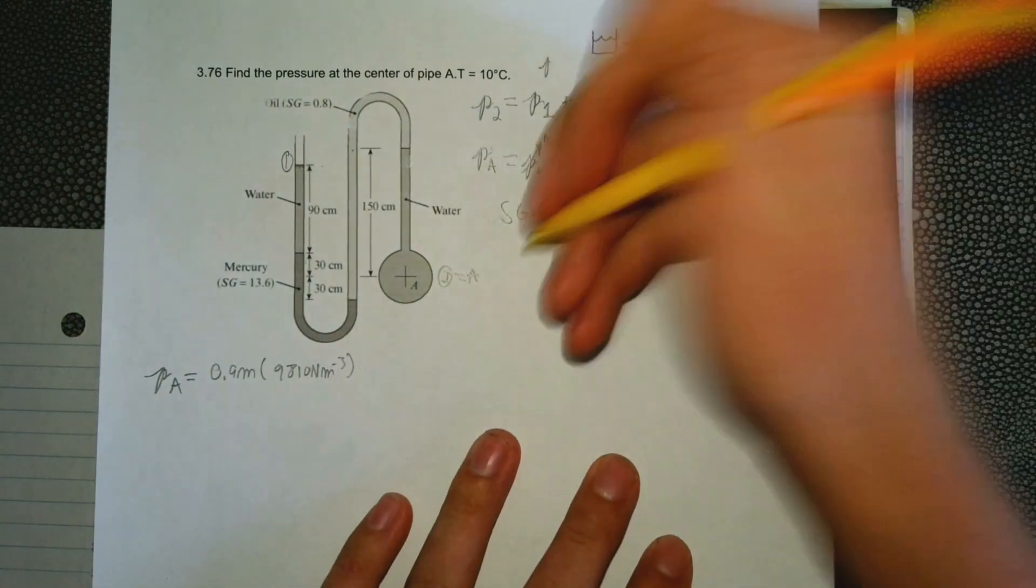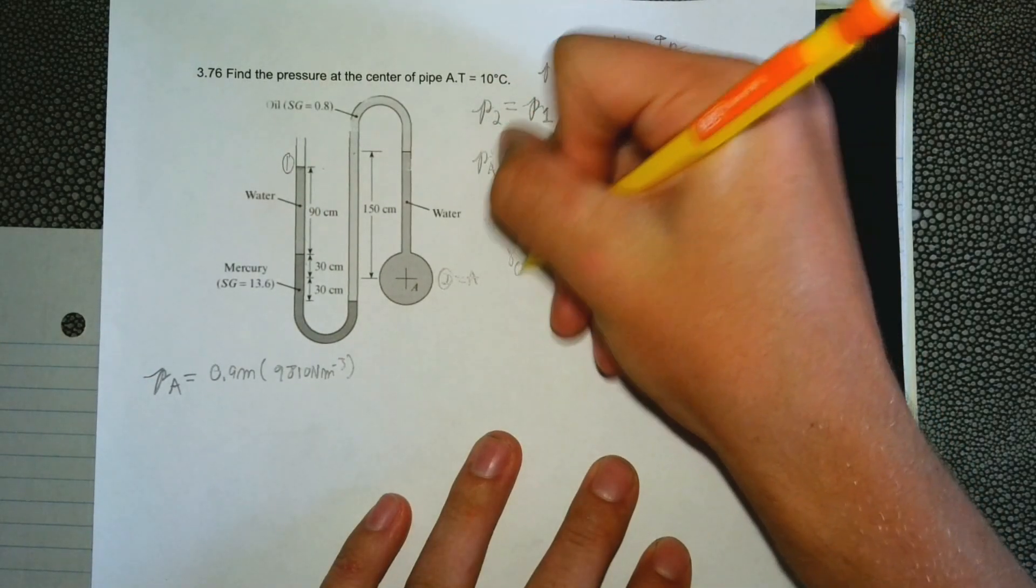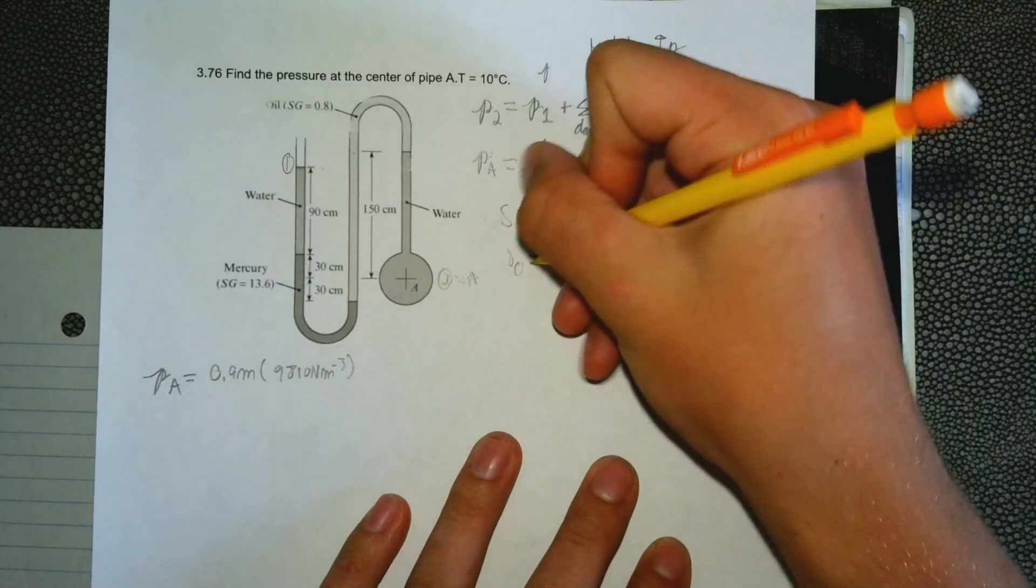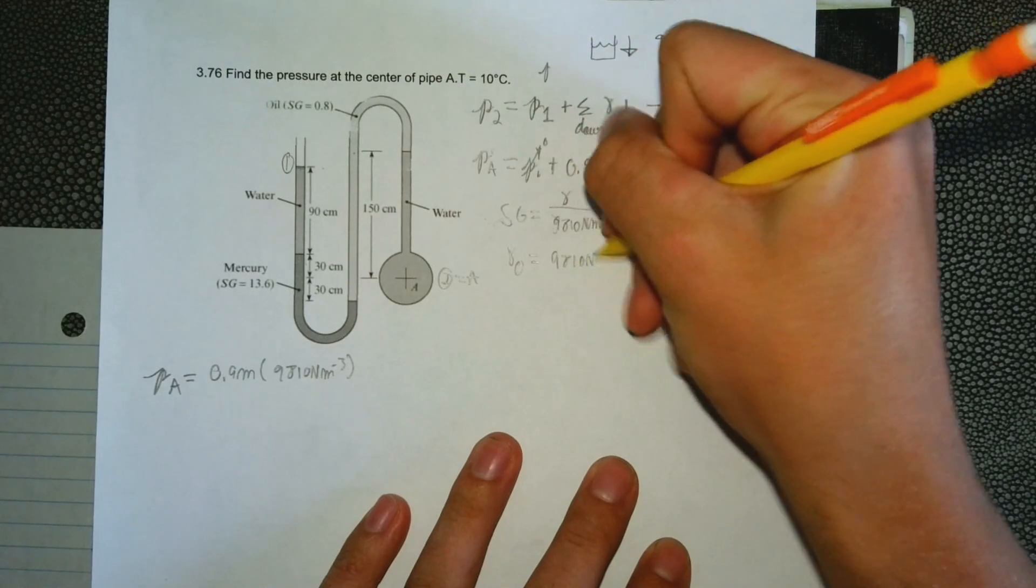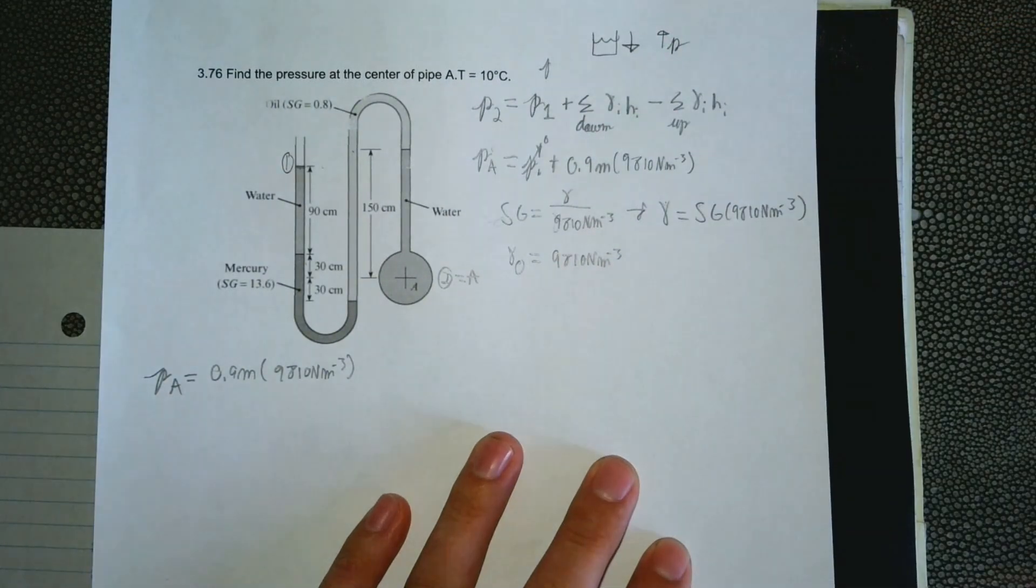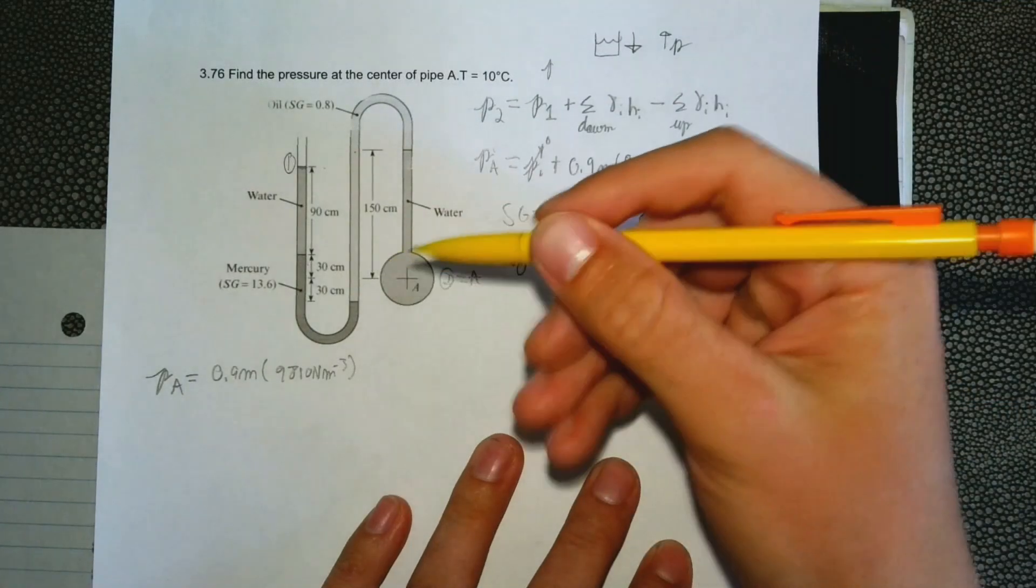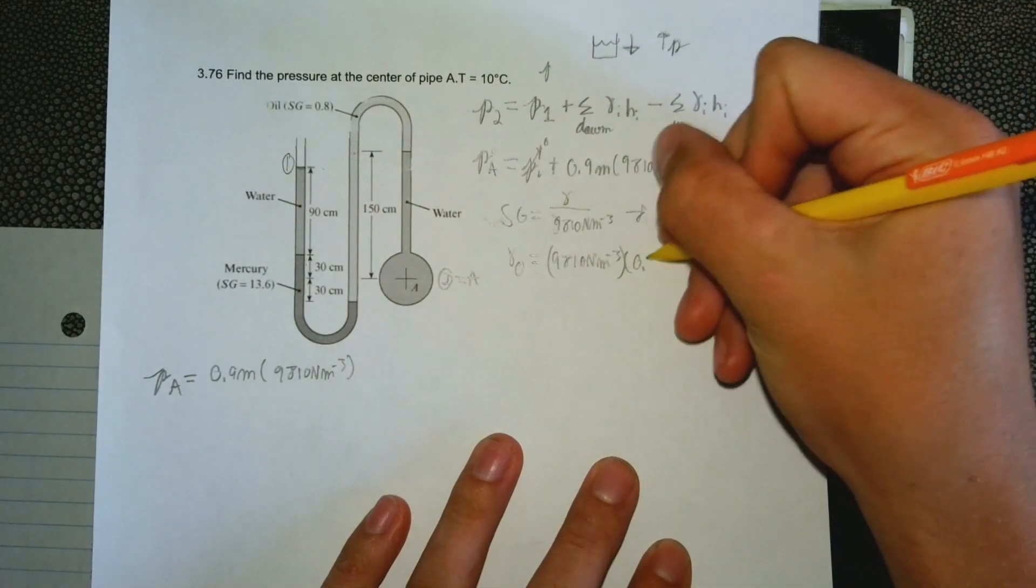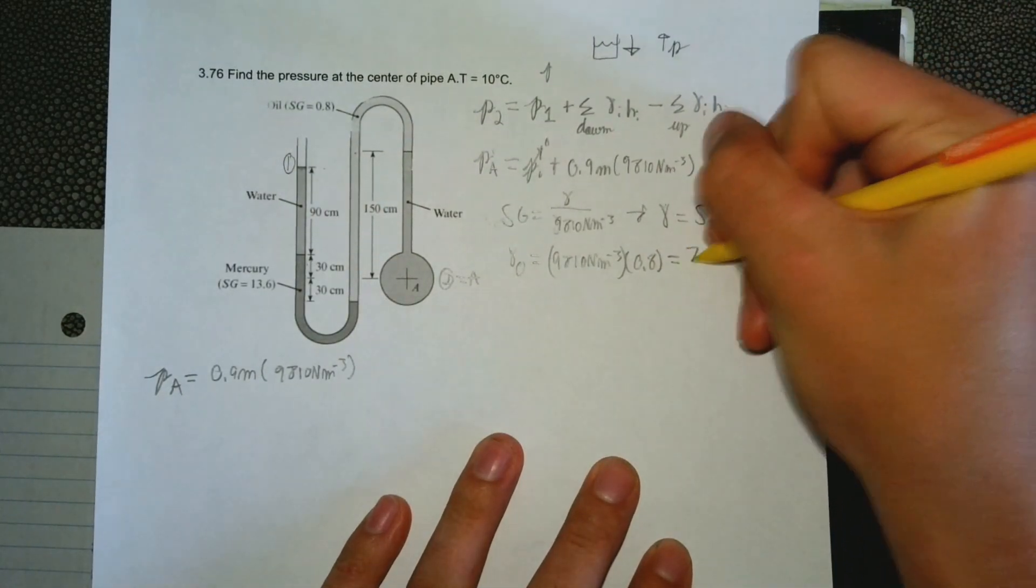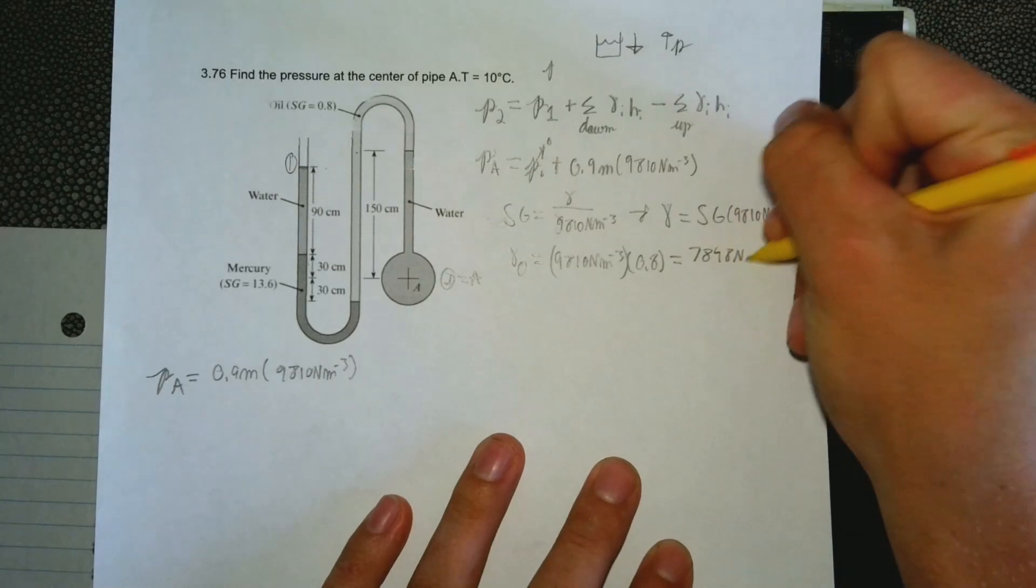To find the specific weight of oil, we do 9,810 Newtons per meter cubed times the specific gravity that is given, 0.8. That gives us 7,848 Newtons per meter cubed.